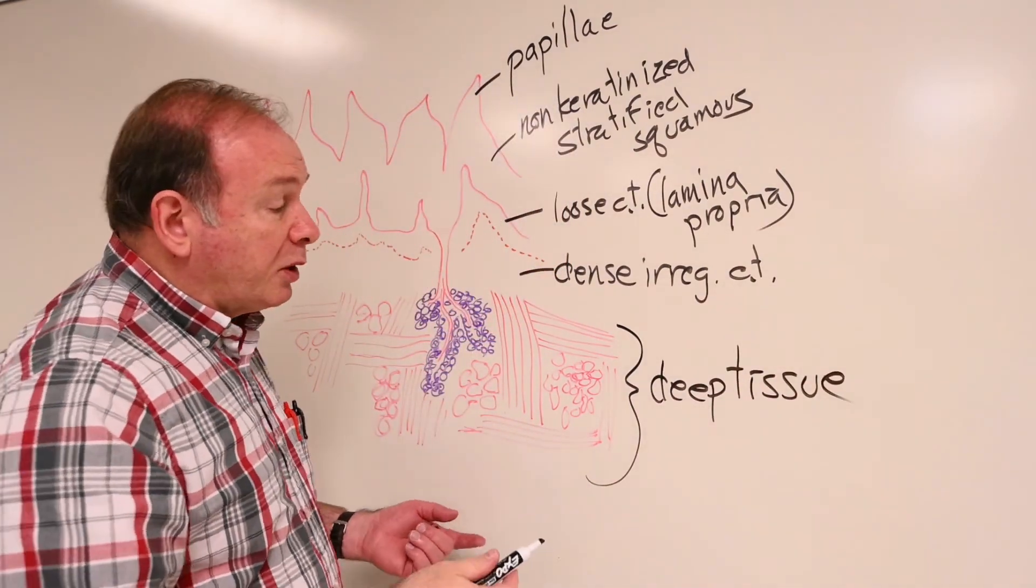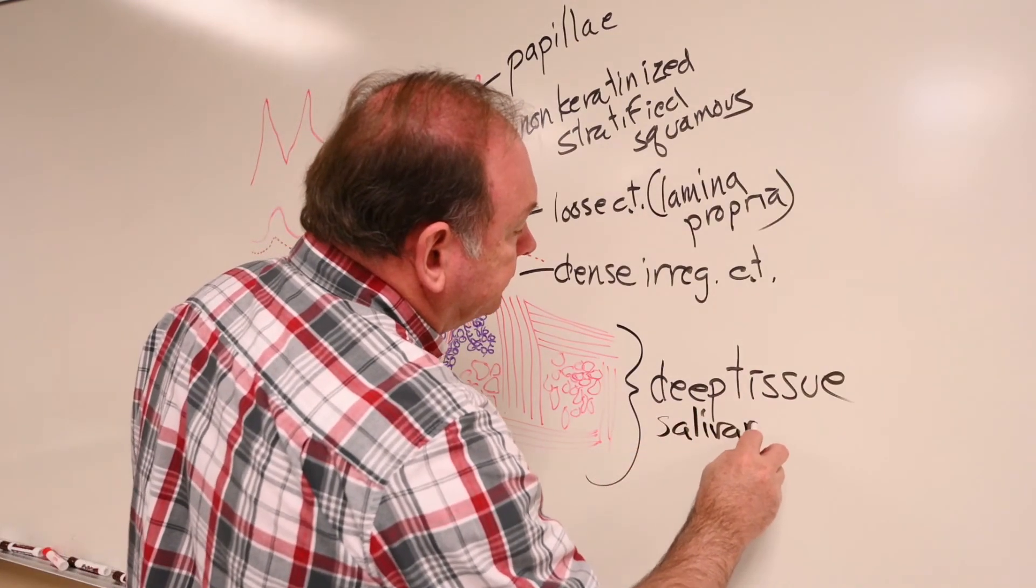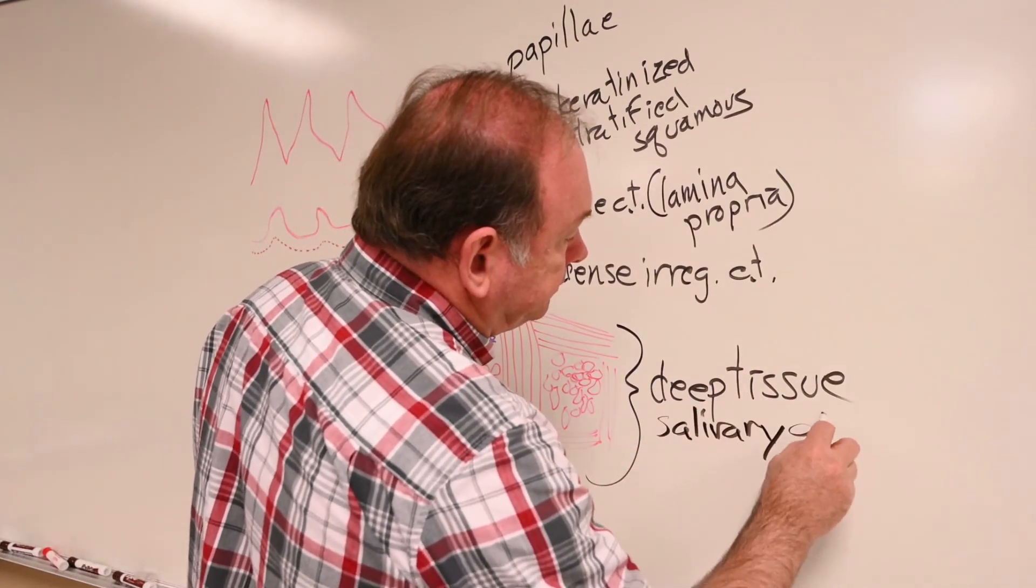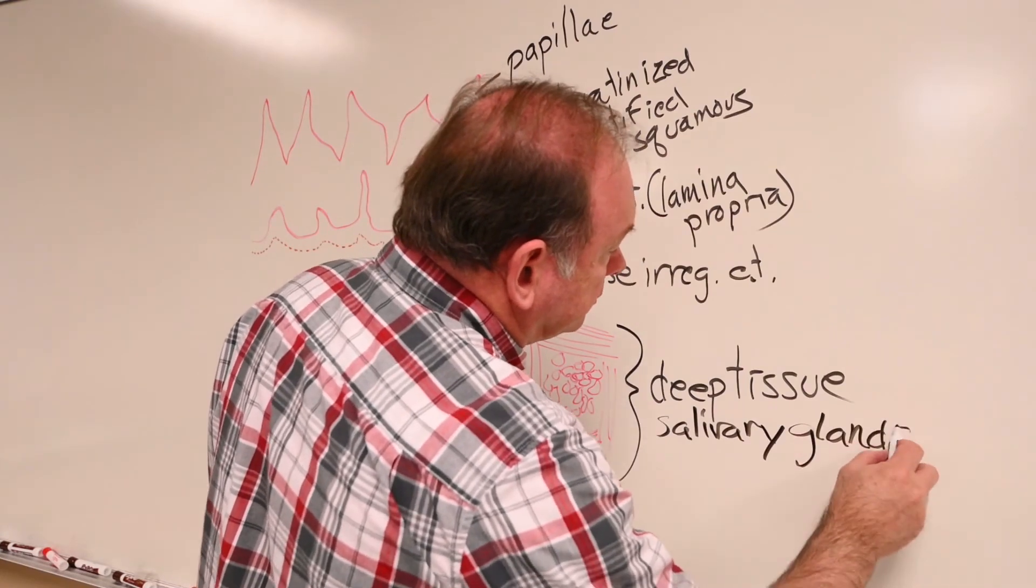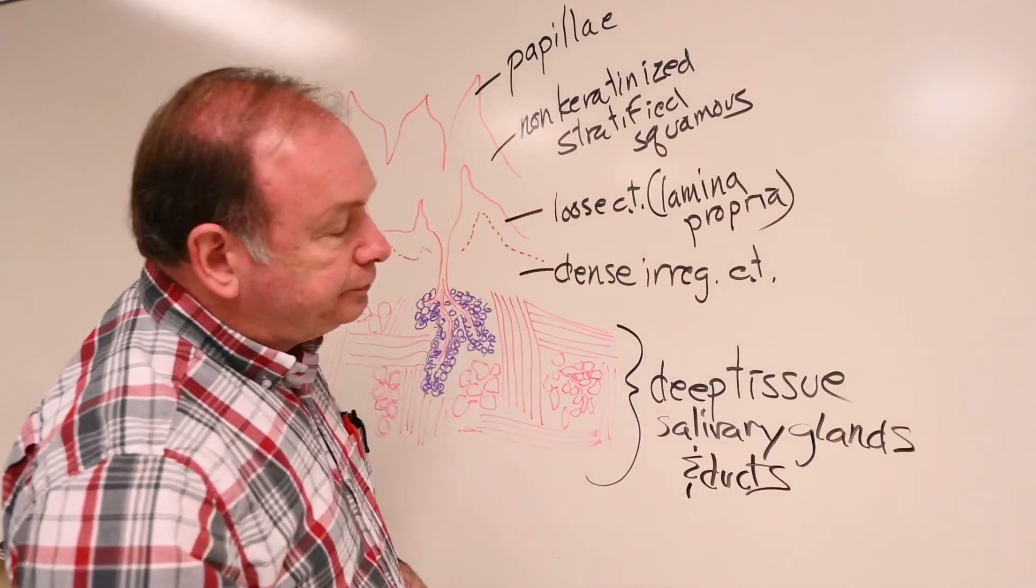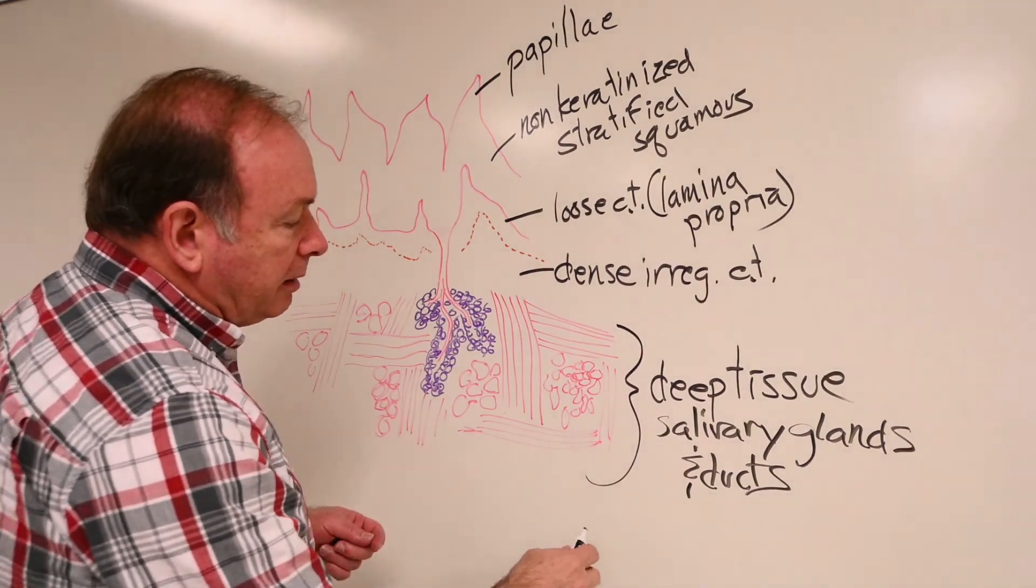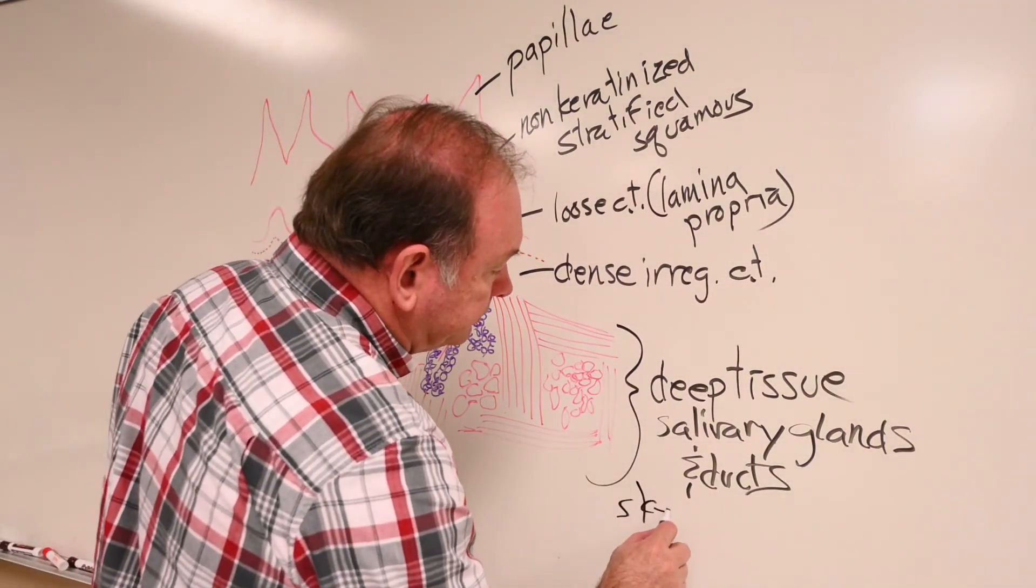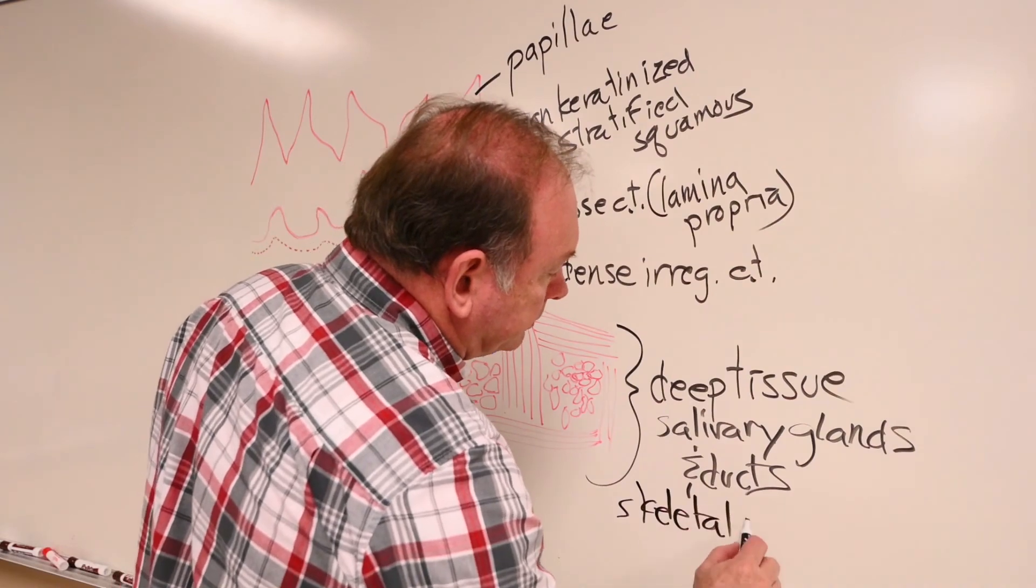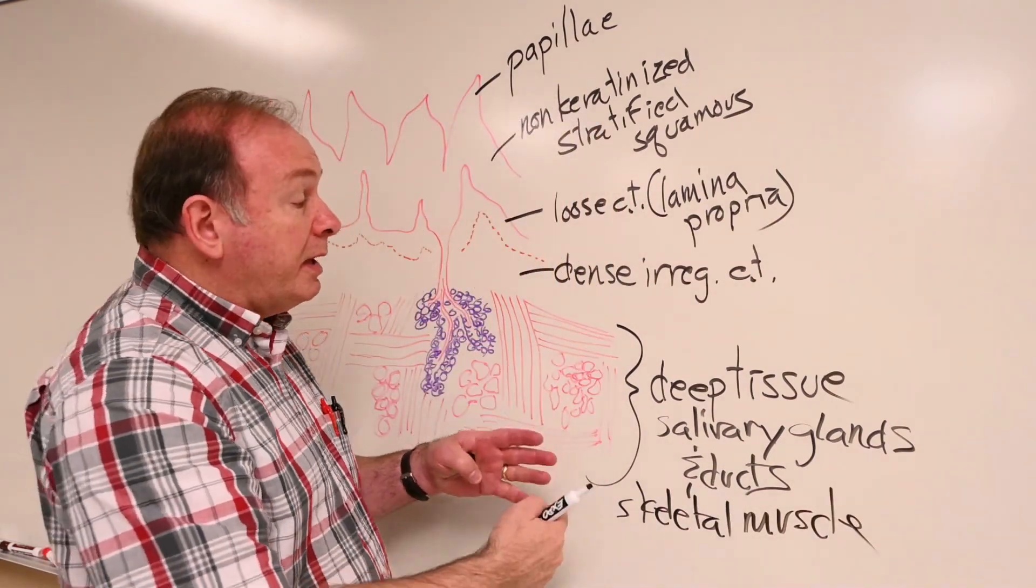And we'll just make a quick list here. I'll mention salivary glands. And there are ducts. Skeletal muscle. And it's going in different directions. Some longitudinal, some up and down, some going across the width of the tongue.